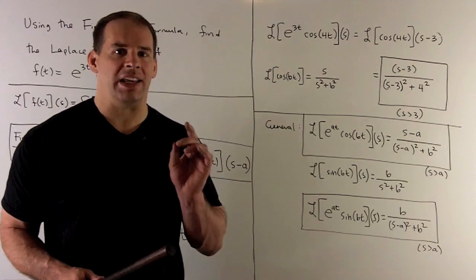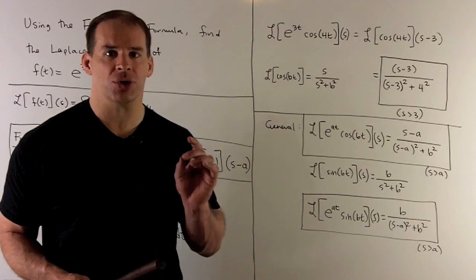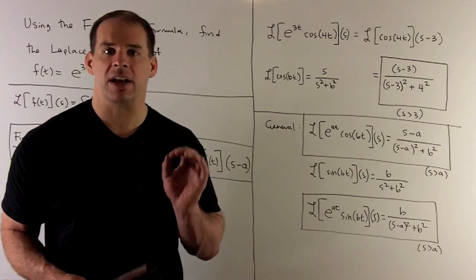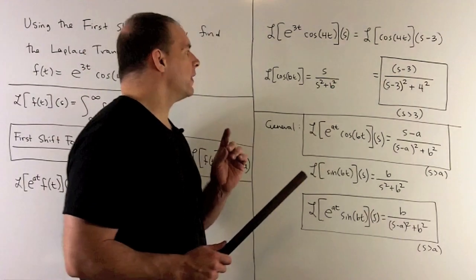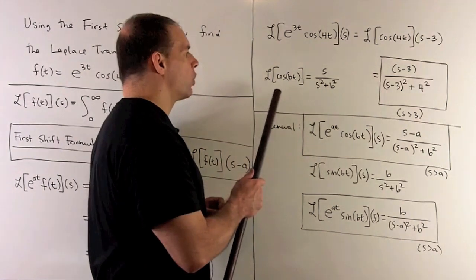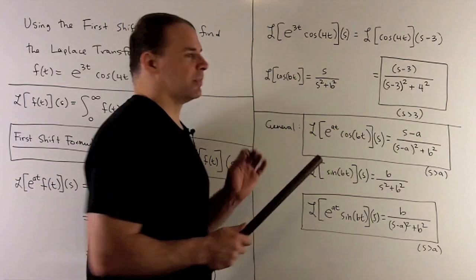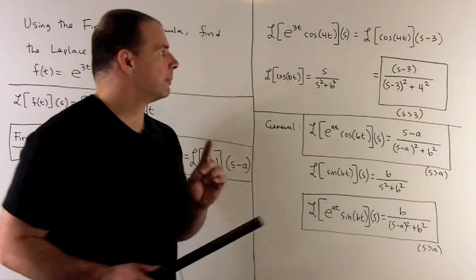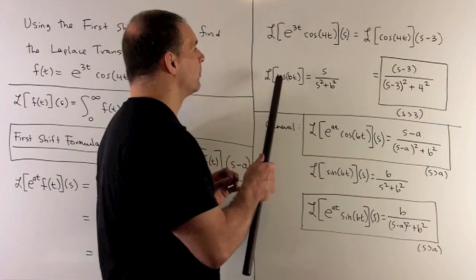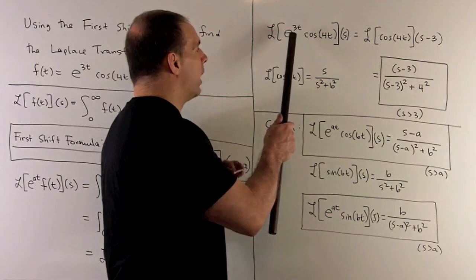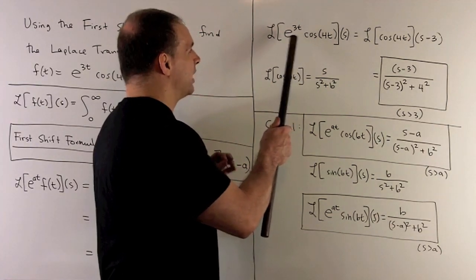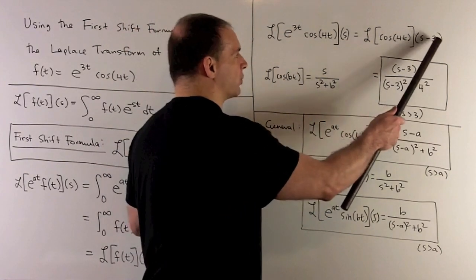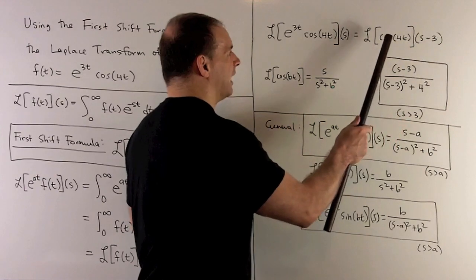When we use our formula, we need to know how to do the Laplace transform of cosine(4t). The rule is Laplace transform of cosine(bt) equals s over s² plus b². If we're going to do our shift, we take our s and replace it with s minus 3.